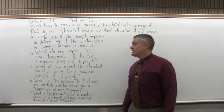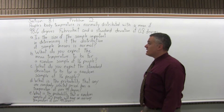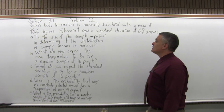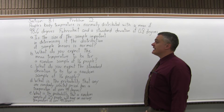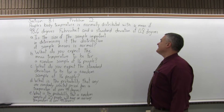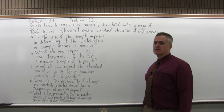It says people's body temperature is normally distributed with a mean of 98.6 degrees Fahrenheit and a standard deviation of 0.8 degrees.